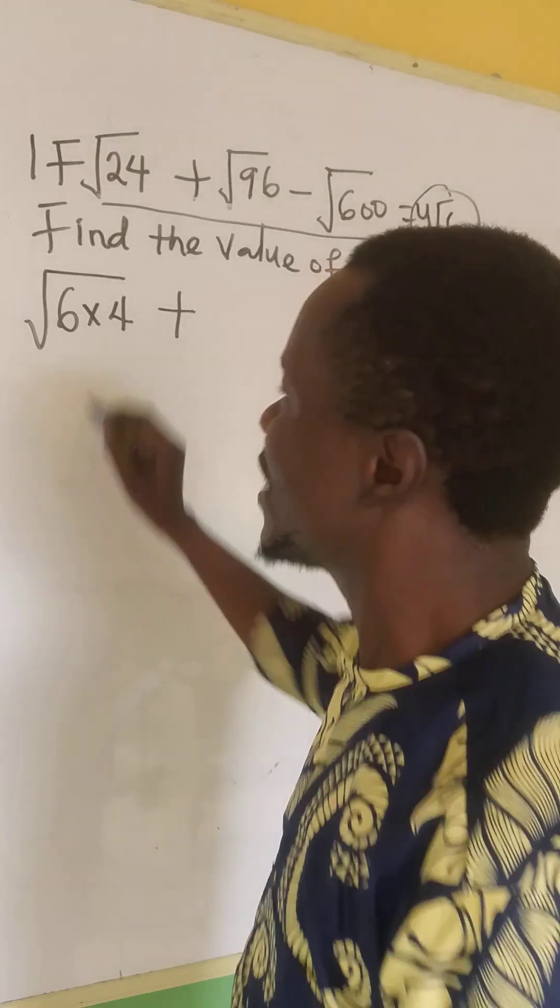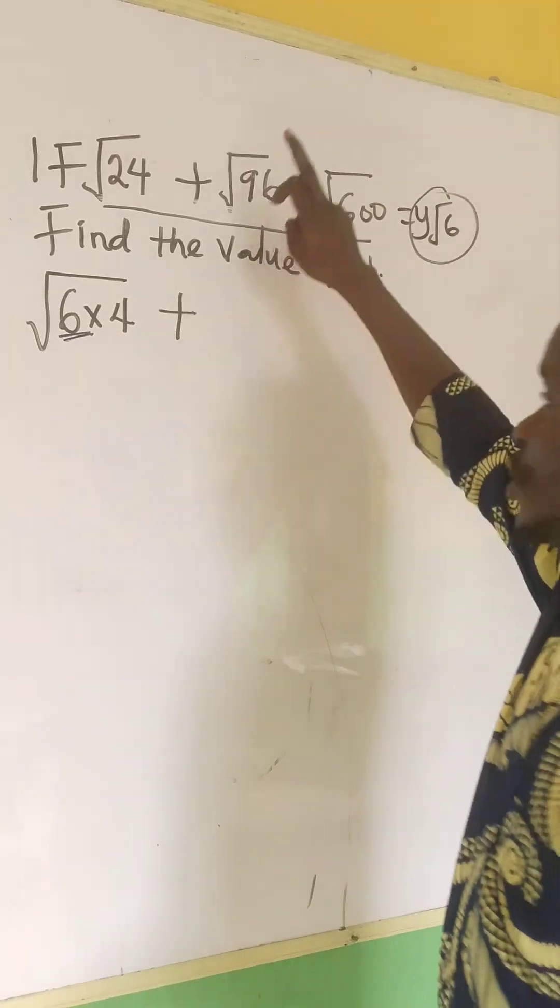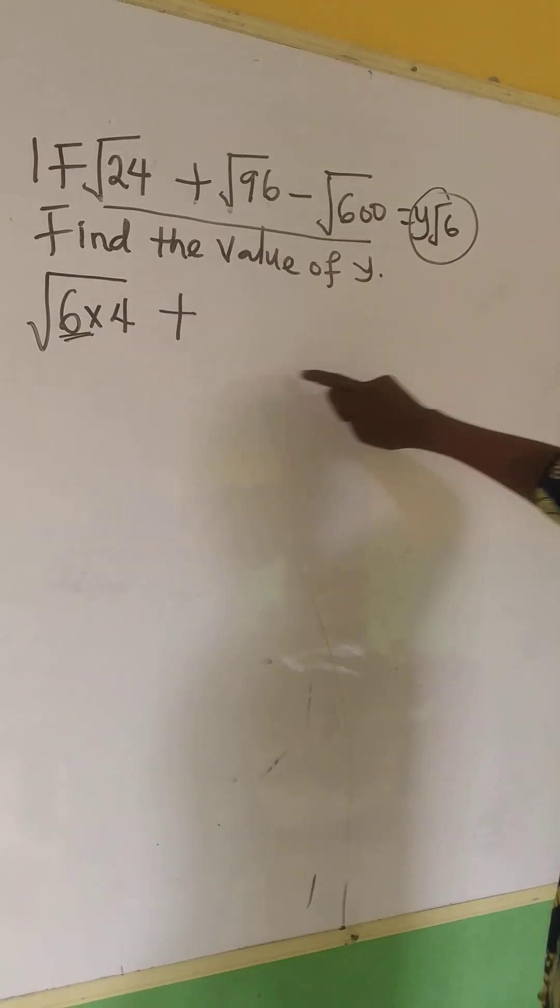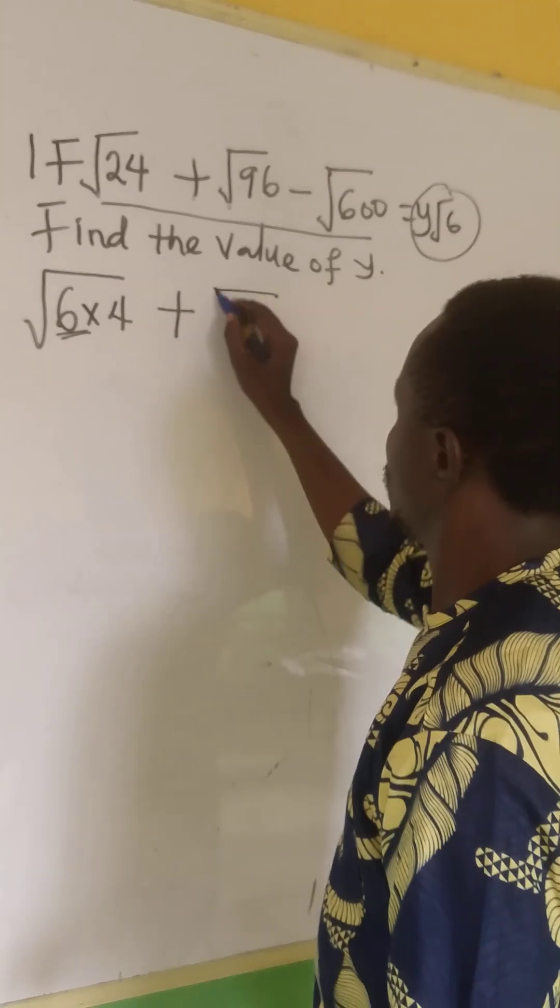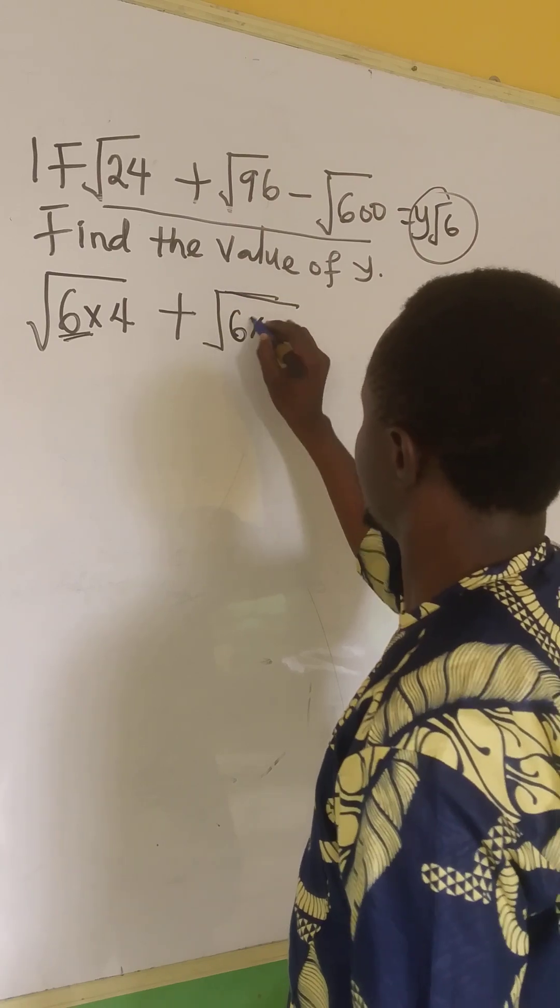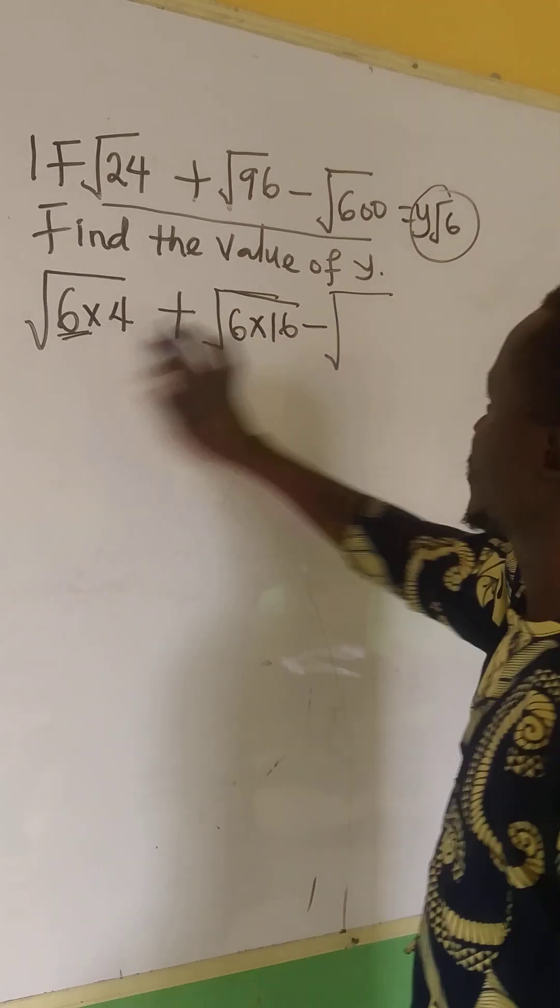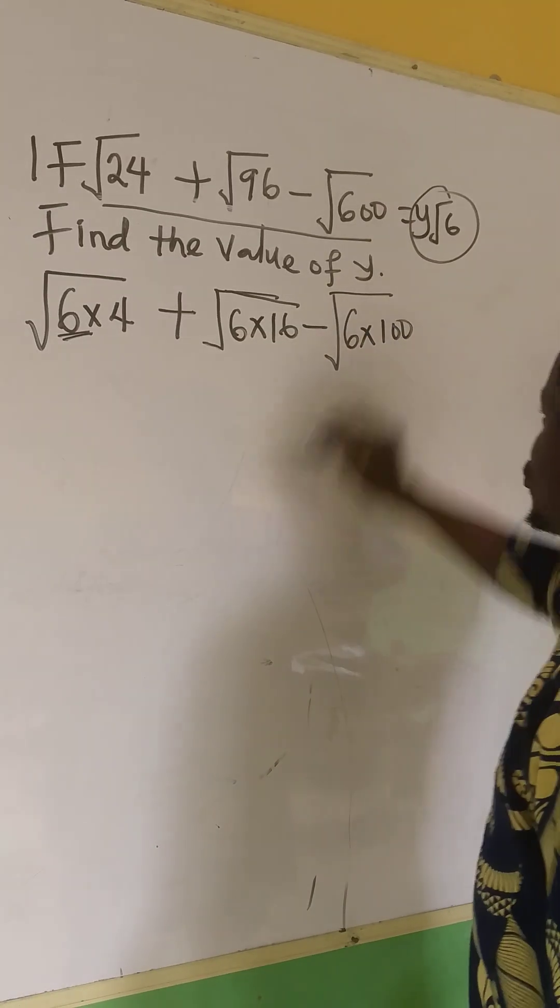Plus, the moment I have an imperfect square here, that means it will be present here and it will also be present here. So 6 in 96 also will give me 6 times 16, minus 6 in 600 is 6 times 100.